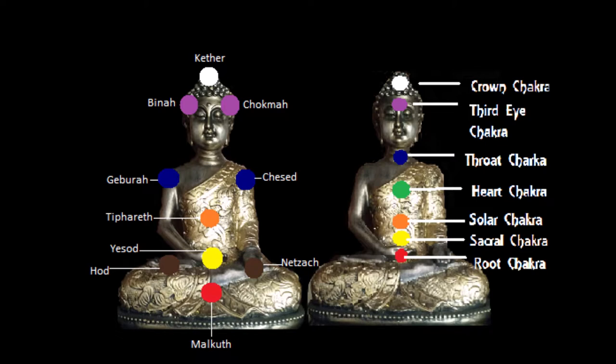I was originally going to cover the Kabbalah Tree of Life the following way: Malkuth is at the bottom, where the root chakra is in the chakra system. Yesod is on the same level as the sacral chakra. Hod is the right hip and Netzach is the left hip. Tiferet is at the same location as the solar plexus chakra. Chesed is the left arm and Gevurah is the right arm. Binah and Chokmah align with the third eye chakra, and Kether the crown.